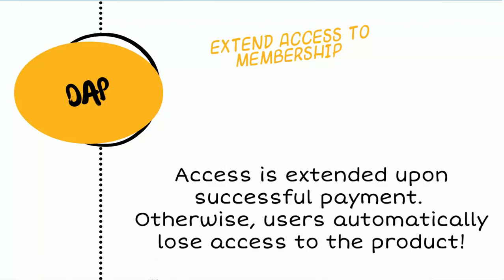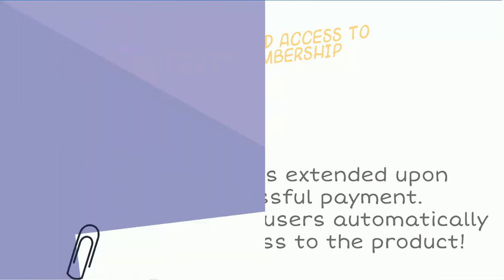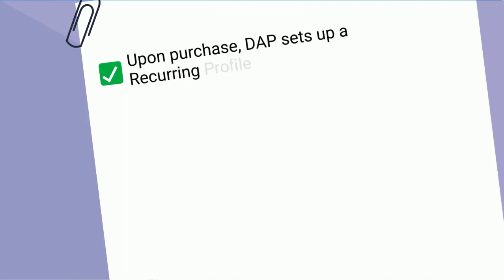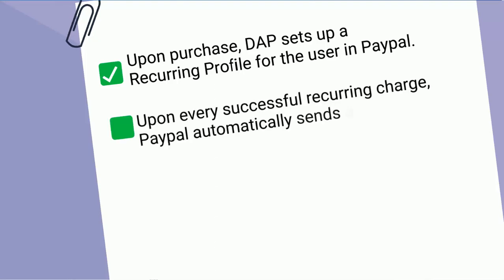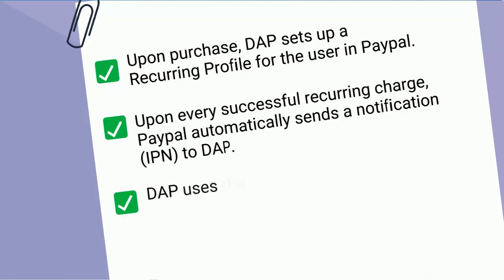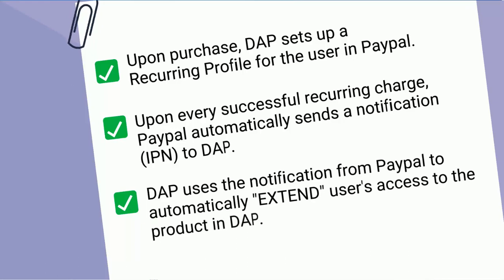In DAP's case, when users make a purchase of a recurring subscription product on your site, upon the first payment, DAP sets up a recurring profile for the user in PayPal. Going forward, every month or every year based on whatever your subscription cycle is, PayPal automatically charges the user, and uses the IPN to let DAP know the payment was successfully completed. DAP uses a successful payment notification to extend users' access to the product. If no payment comes in, access does not get extended, and users automatically lose access.